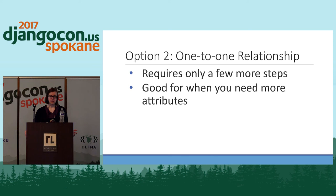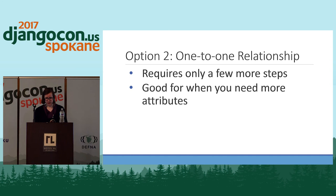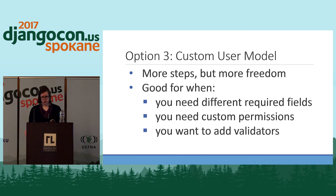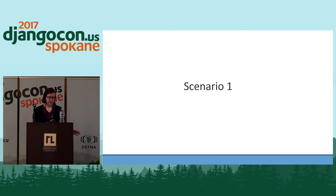Our second option is to create a new model that has a one-to-one relationship with the user model. Again, we're just extending the existing user model, and this requires a few more steps, but it will allow us to add more attributes to our users. Our third option is to completely create our own custom user model, totally replacing the one Django provided, giving us more freedom. This is really good when you need different required fields, custom permissions, or want to add validators to your user model.